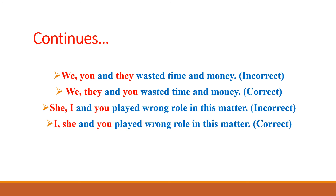The third example for rule 52: 'she, I and you played a wrong role in this matter'. This sentence is incorrect because it doesn't follow the appropriate order. The correct order is 'I, she and you played a wrong role in this matter'. To recap: if the action is good, the code is 231 — second person, third person, first person. If the action is bad, the code is 132 — first person, third person, second person.